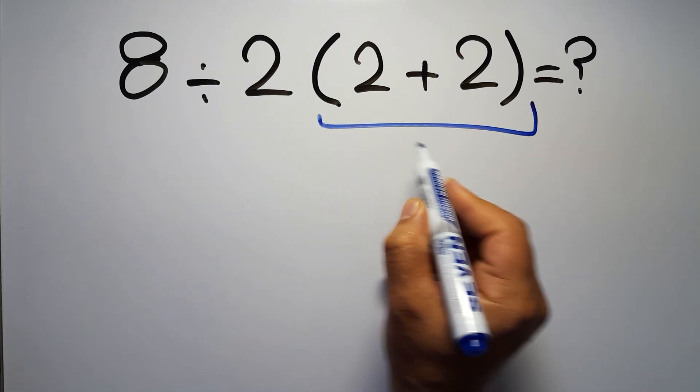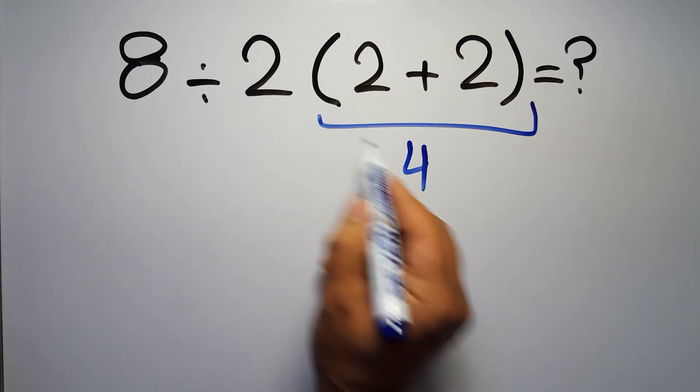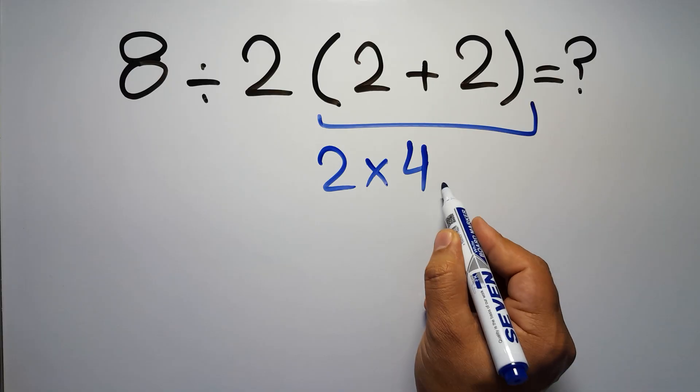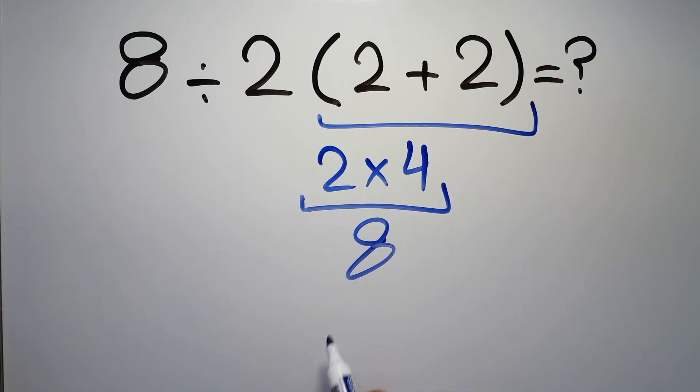2 plus 2 gives us 4, and 2 times 4 is just 8, so 8 divided by 8 gives us 1. But this answer is not correct.